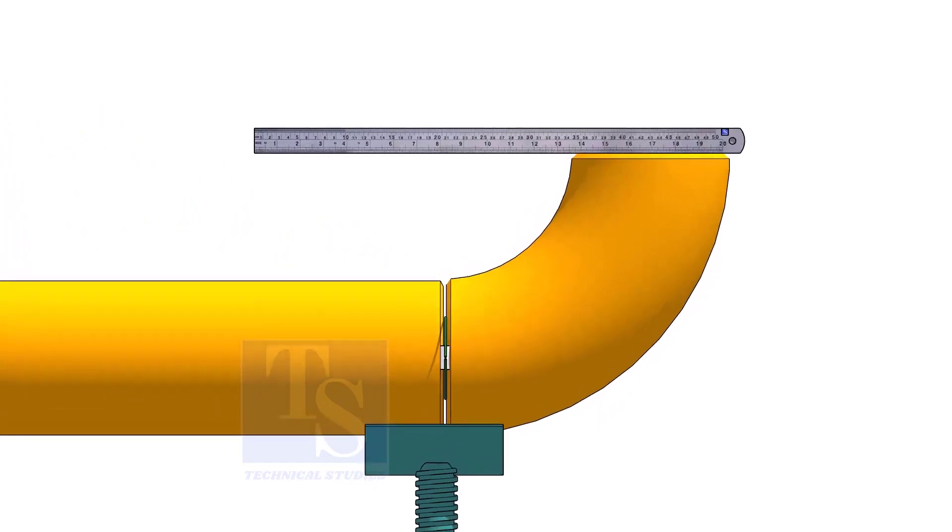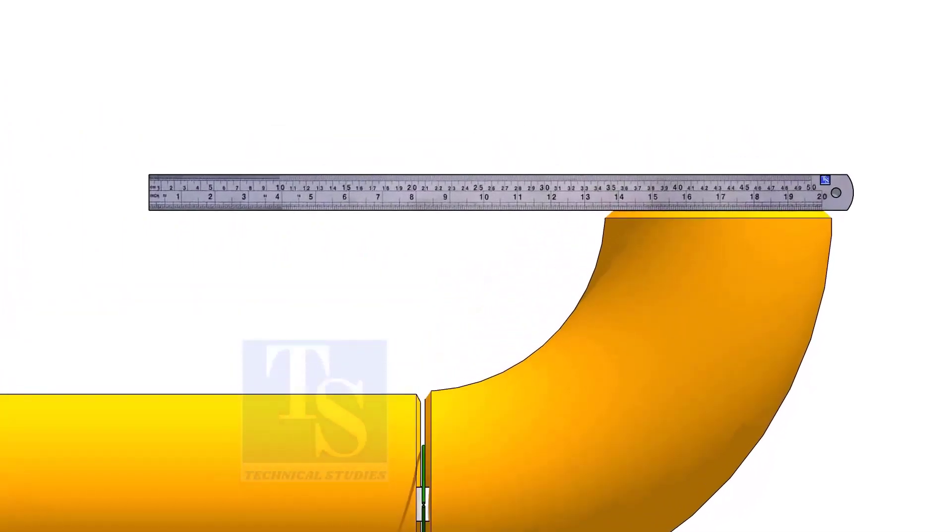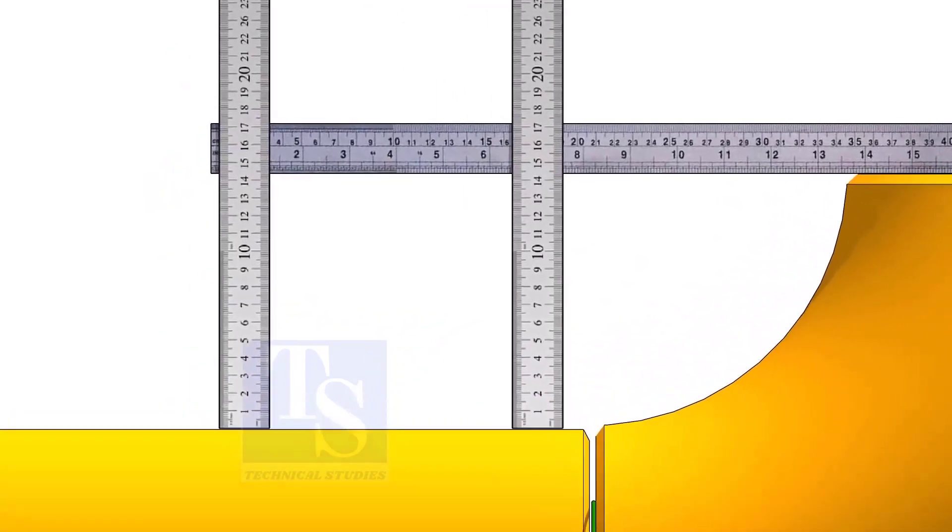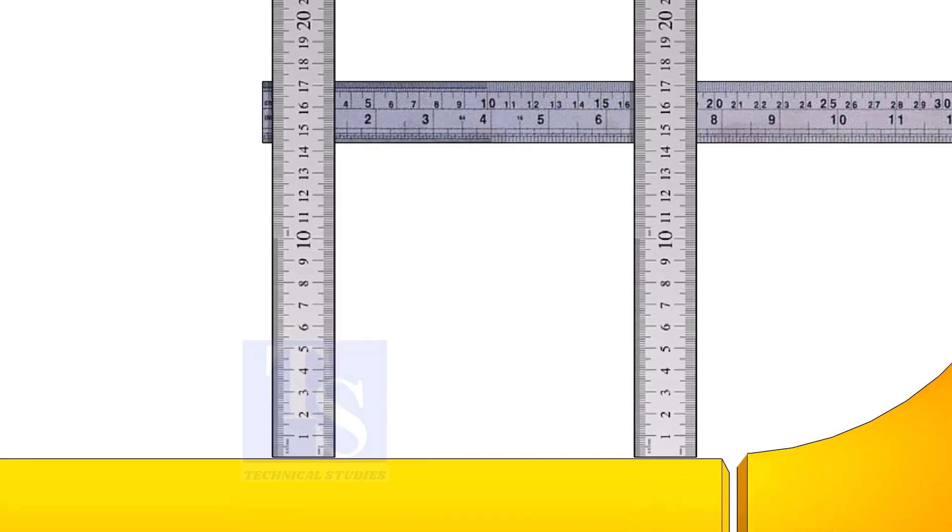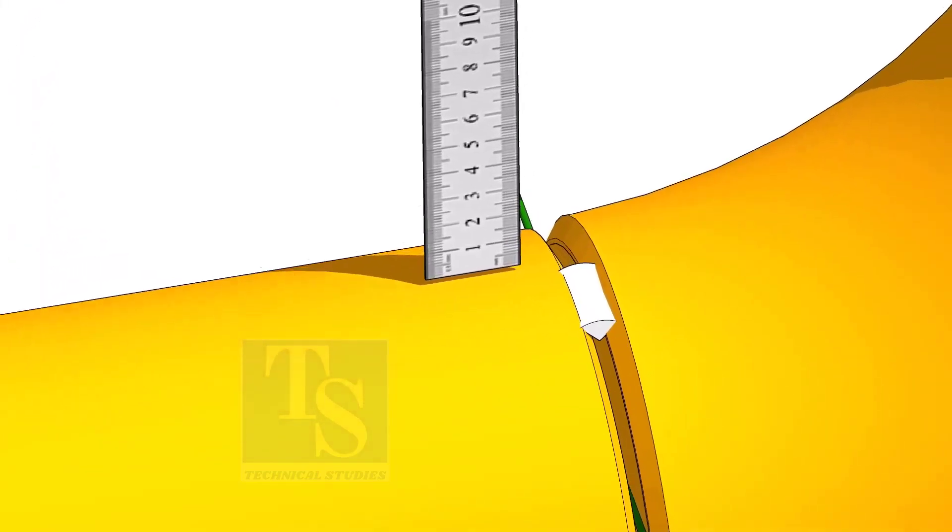Hold a scale on the top of the elbow and measure the distance. Tack weld on the top and bottom side of the joint.